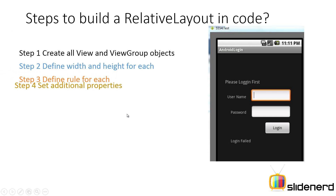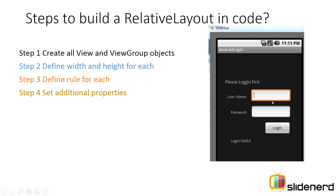In the fourth step we have additional properties. For example, this username text view has a text color white and probably a background color black. This edit text probably has a background drawable — it doesn't look like a default edit text. So all these additional properties like text size, text color, background color — those are your additional properties defined in step four.